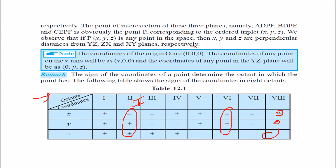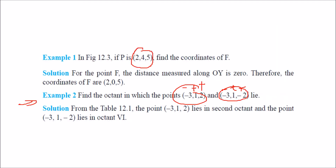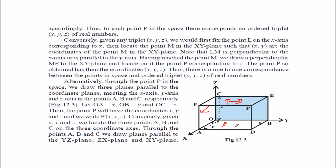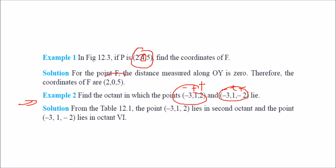The origin of x, y, z will be (0, 0, 0). Any point on the x axis will be (x, 0, 0). Any point on the yz plane will be (0, y, z). Now, if the point is (2, 4, 5), find the coordinate of F. Looking at the diagram 12.3, F is in the xz plane, so y will be 0 here. Placing y as 0 gives the answer.